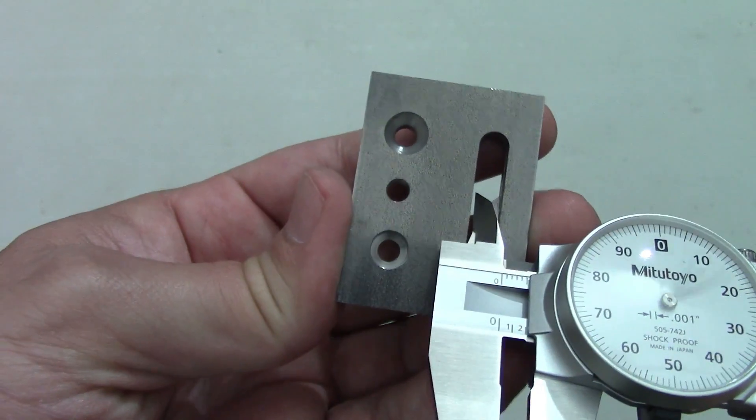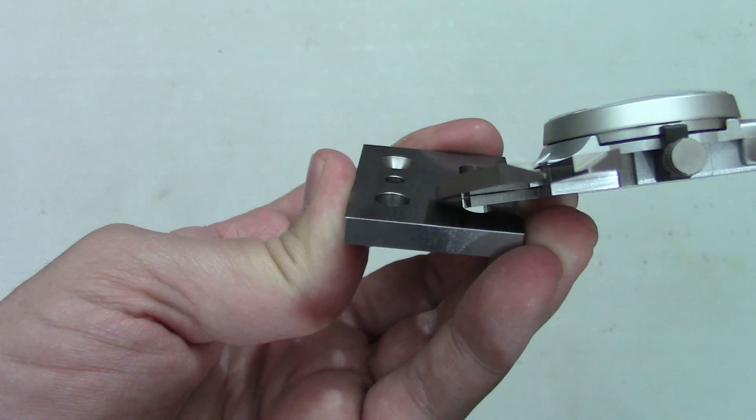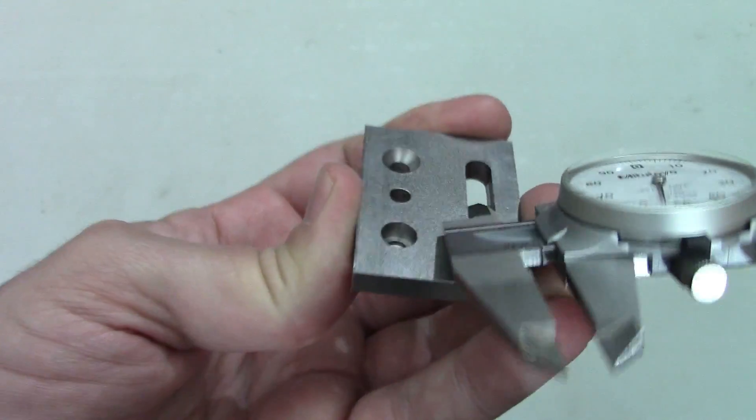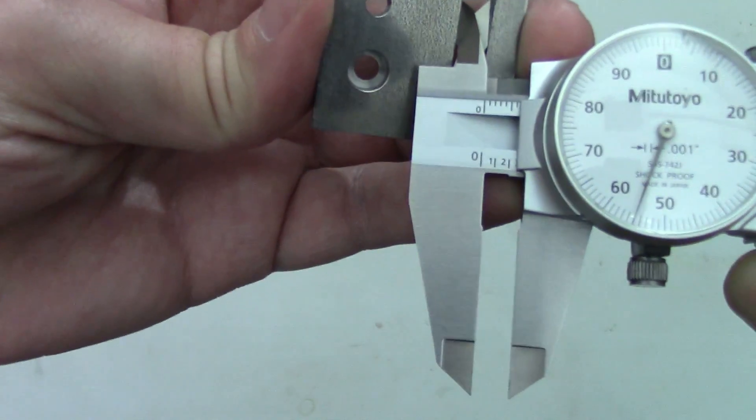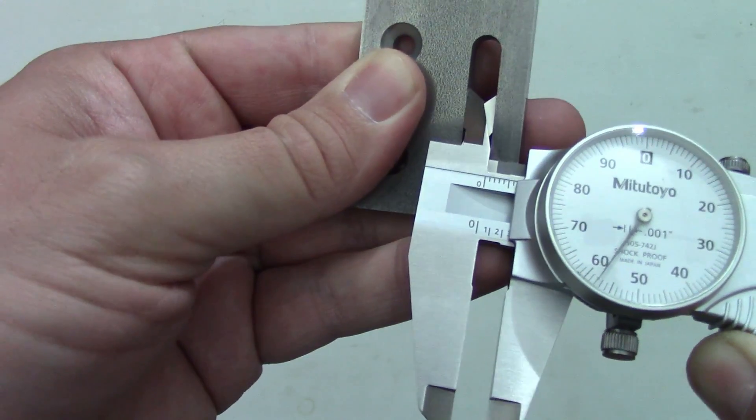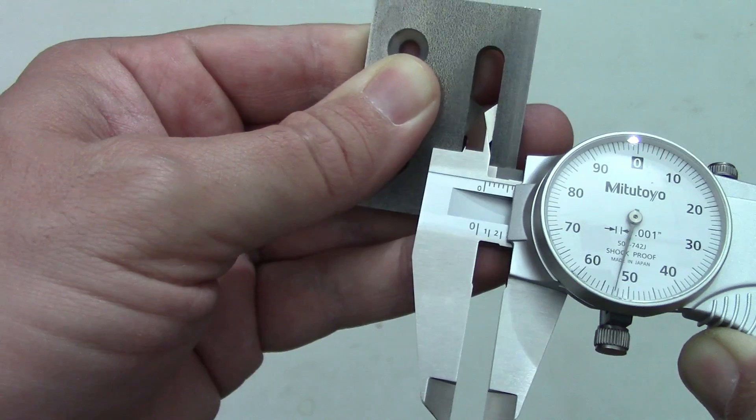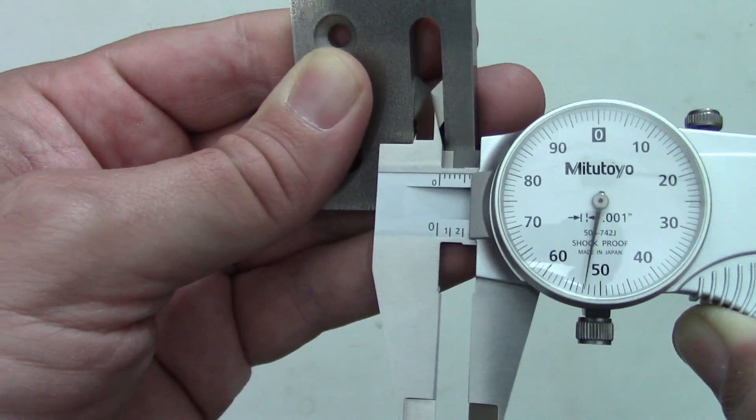However, when you're measuring something like a slot or a keyway, it's quite easy to hold the calipers at an angle to the feature. This results in a larger measurement than what you actually have. In these situations, you need to rotate the jaws within the part like before, but now you're looking for the point where the calipers read the smallest measurement.